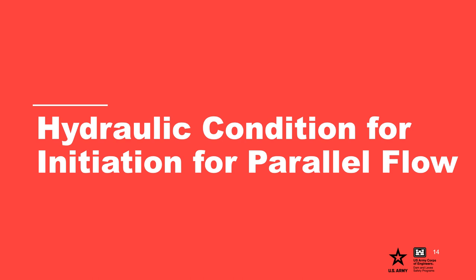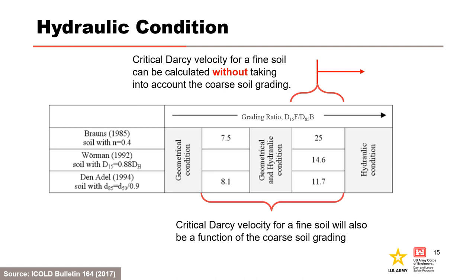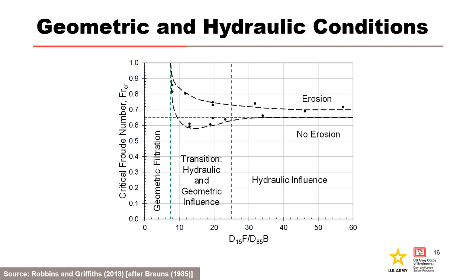Next, we'll discuss the hydraulic condition for initiation for flow parallel to the interface. When the ratio of D15 of the filter to D85 of the base is greater than the values in the fifth column of this table, hydraulic loading controls and there is no soil filtration effect as it relates to soil contact erosion. In between these two limits, geometric and hydraulic factors control erosion. This figure shows the influence of the geometric and hydraulic conditions on the critical Froude number for erosion. In the transition zone, the hydraulic loading needed to initiate erosion is higher than in the domain of pure hydraulic influence. Once the ratio of D15 of the filter to D85 of the base becomes greater than about 25 to 30, purely hydraulic conditions control the erosion.